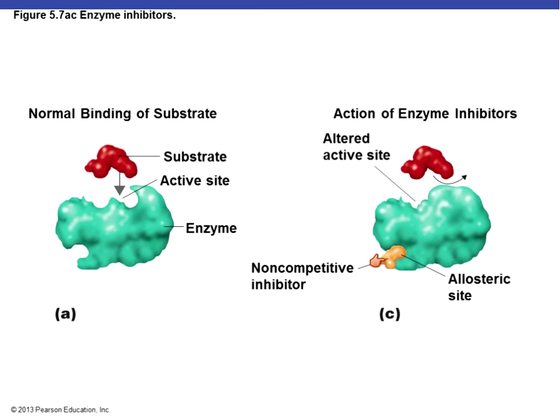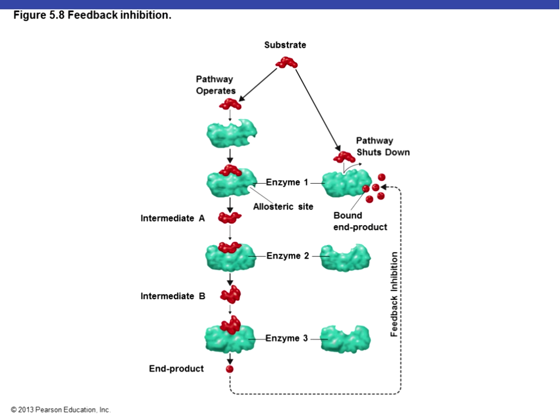For non-competitive inhibition, instead of the inhibitor outcompeting the substrate for the active site, it binds at a location outside the active site called the allosteric site. When the non-competitive inhibitor binds there it causes the active site to lose its shape so there's no place for the substrate to bind. Unlike competitive inhibition, these inhibitors don't bind to the active site — they change the shape of the active site by binding elsewhere, chemically causing the enzyme to change shape slightly.